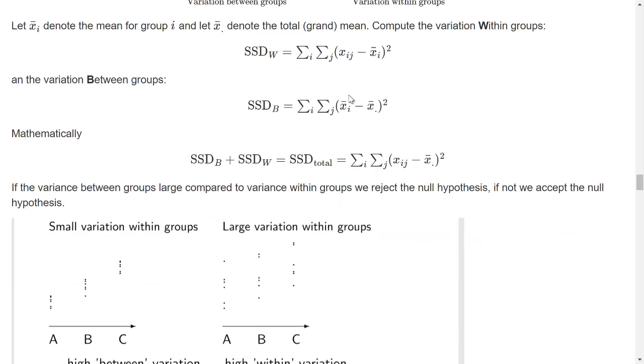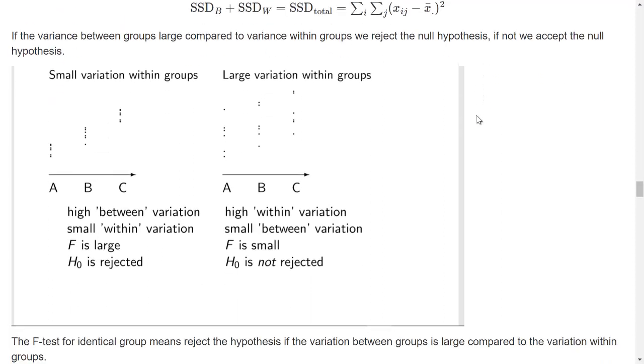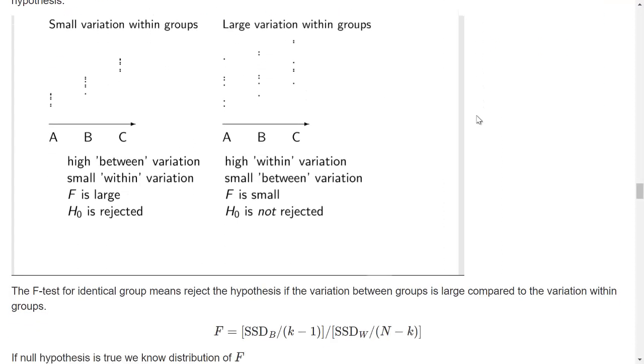So we use some calculations to calculate the sum of squared deviations. It turns out that we can write up this formula. And if the variance between the groups is large compared to the variance within the groups, we reject the null hypothesis.